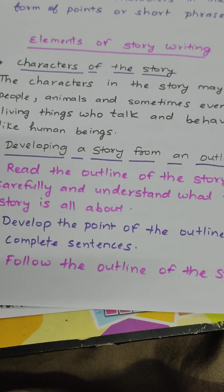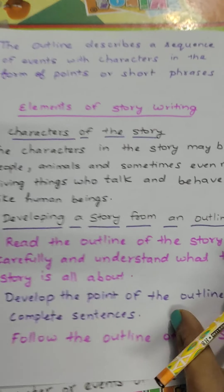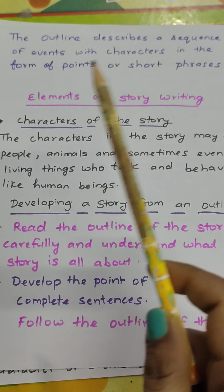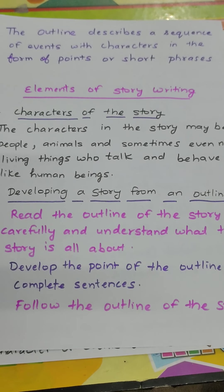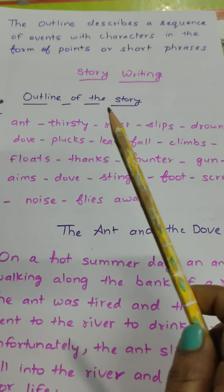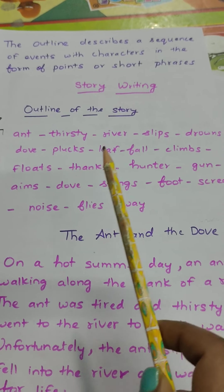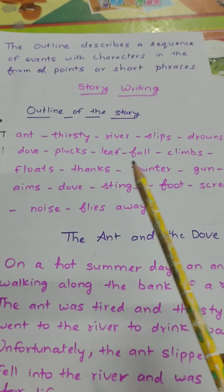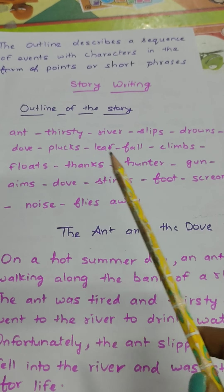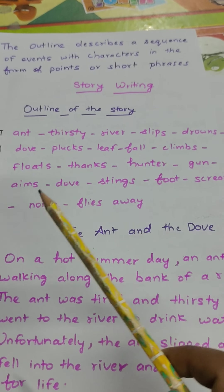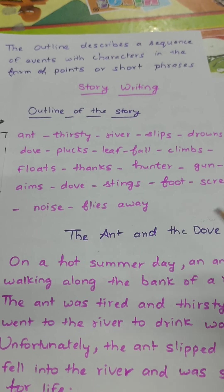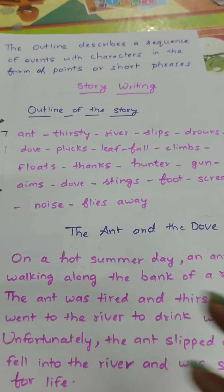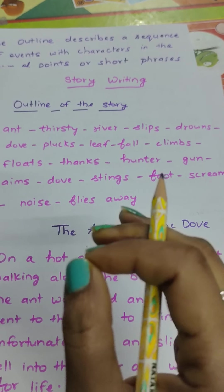Elements of story writing: first, what is the outline? It describes a sequence of events with characters in the form of points or short phrases. Here is the outline of the story — the events happen and the characters are given. The story is what has happened — what are the events in the story. We have to visualize and imagine what is happening in the story.